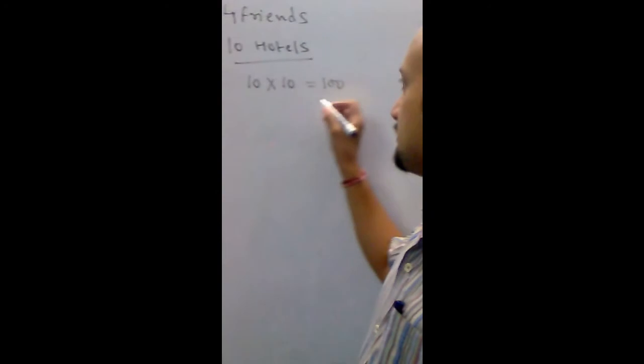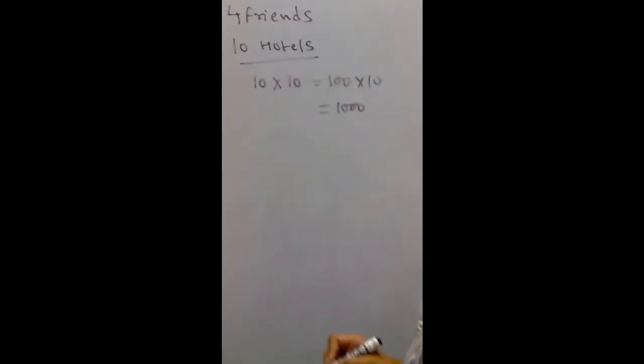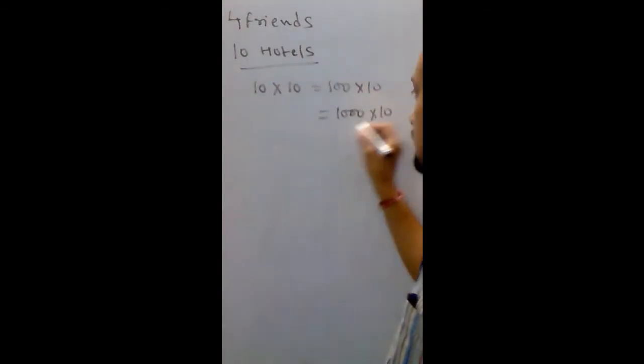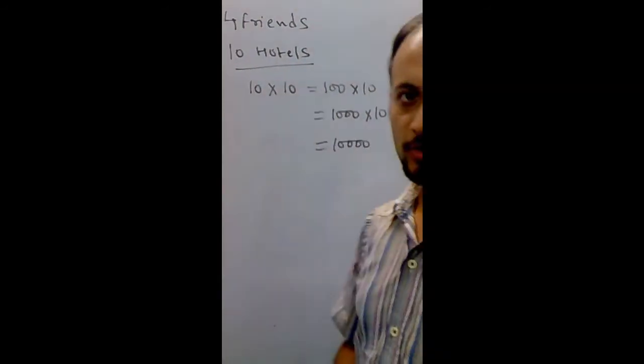Third friend similarly can stay in how many ways? Ten ways. So, all three of them can stay in how many ways? Thousand ways. Fourth friend can stay in how many ways? Ten ways. So, all four of them can stay in how many ways? Ten thousand ways. I am sure this must be clear to all.